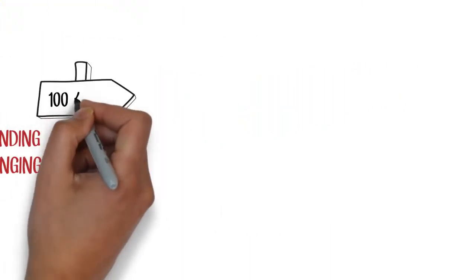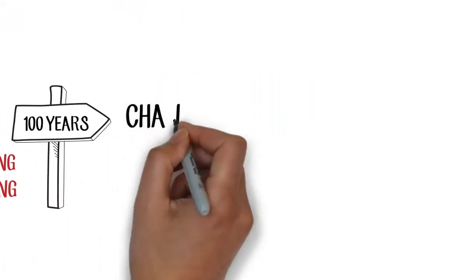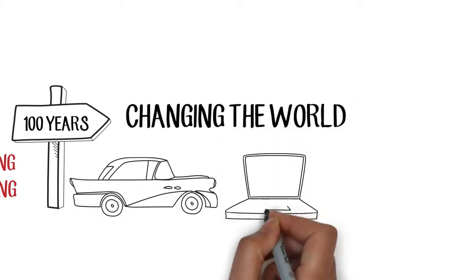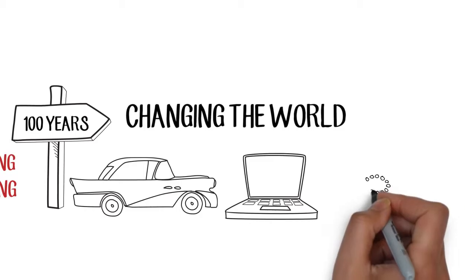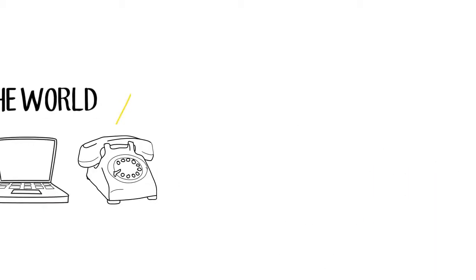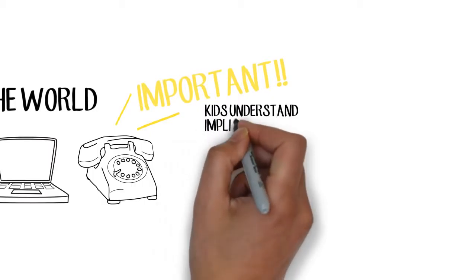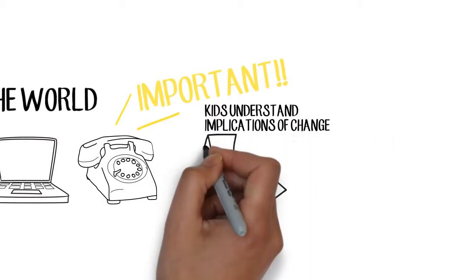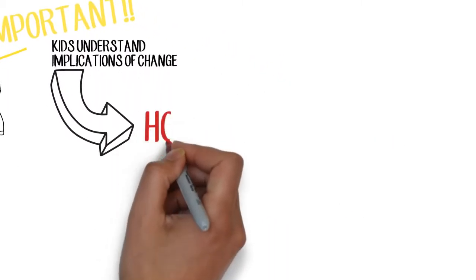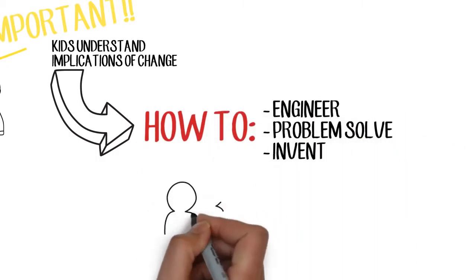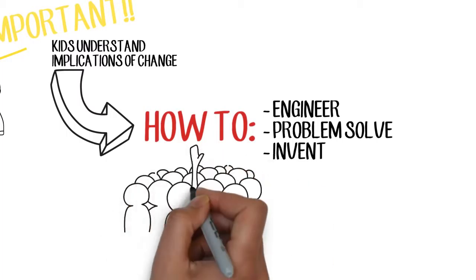As we've seen over the last couple hundred years, engineering has made huge strides in completely changing the world around us from transportation to the internet and communication. It's important that as kids grow older that they understand the implications of these changes. To understand those implications, they need to understand something about how these decisions are made. How do we engineer? How do we problem solve? How do we invent? That's what we want to see happening in classrooms.